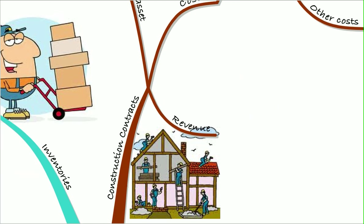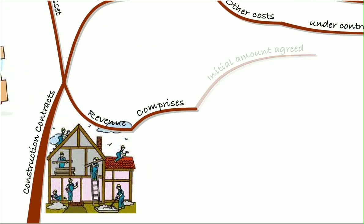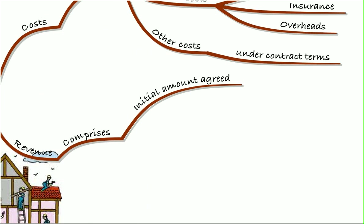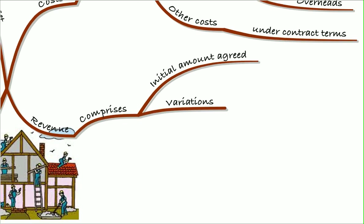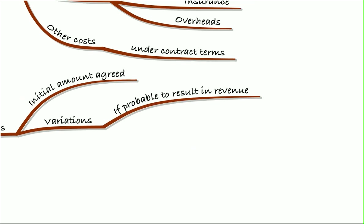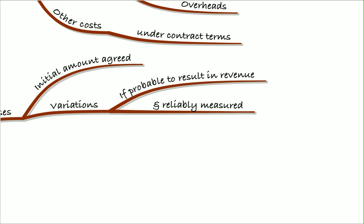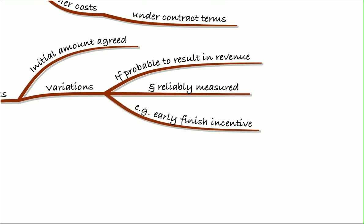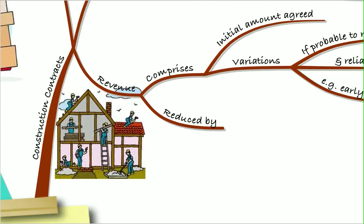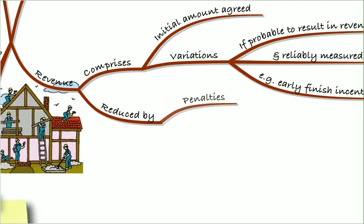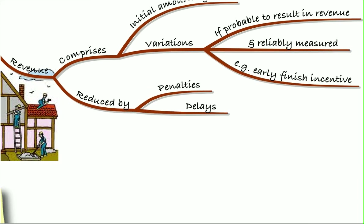What about the revenue then? This will comprise the initial amount that we agree on the contract plus or minus any variations. So if we think we're going to get some extra revenue, then we can include that. So if we can reliably measure it and we're probably going to get it, then we can include it. For example, an early finish incentive. However, we would need to reduce the revenue by any penalties, for example, for delays that are incurred.